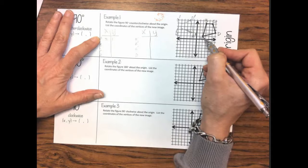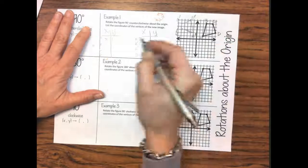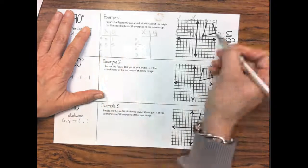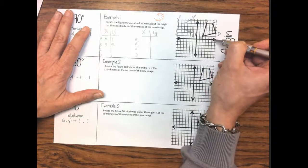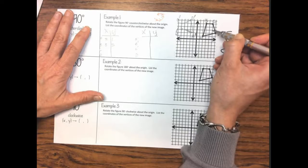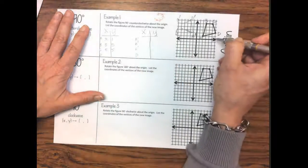b is a positive 3, 5. And c is going to be 5, 5. d is going to be 6, 2.